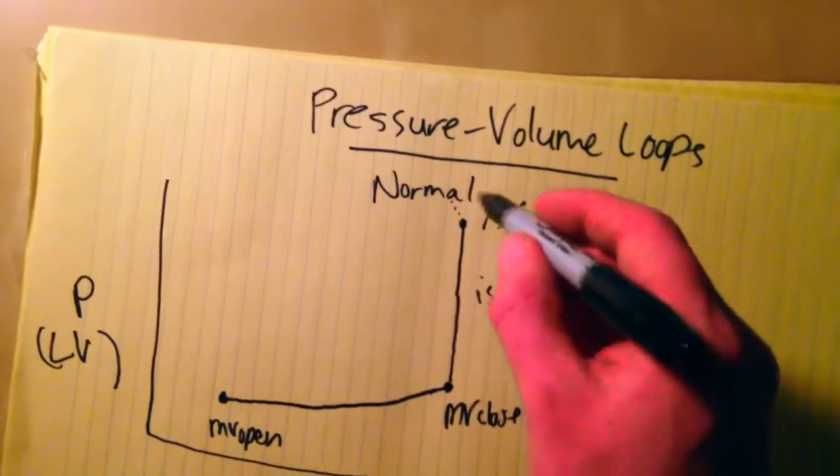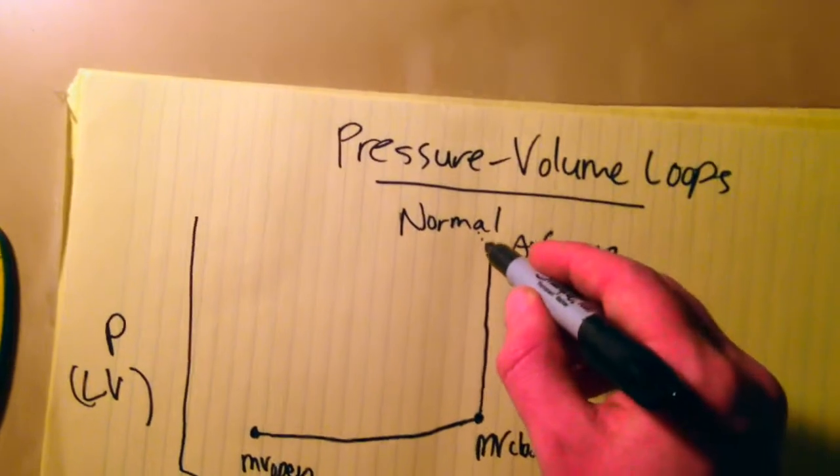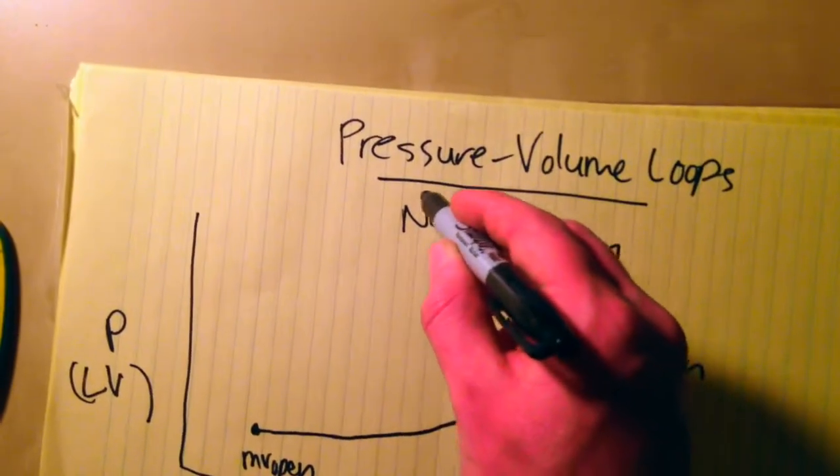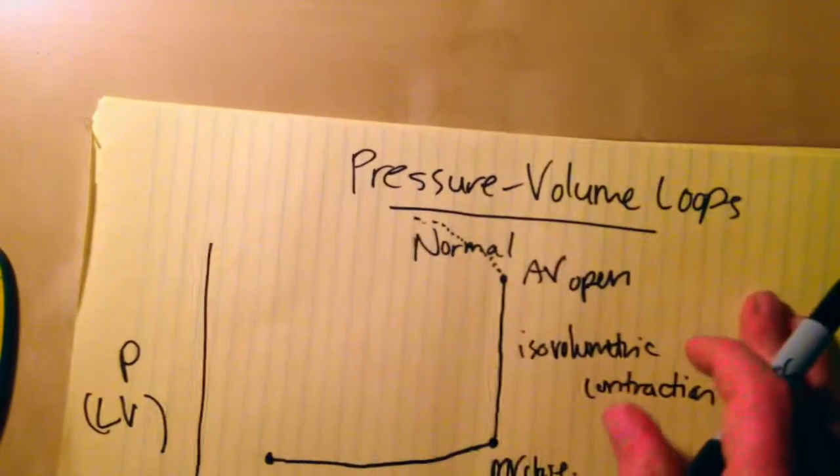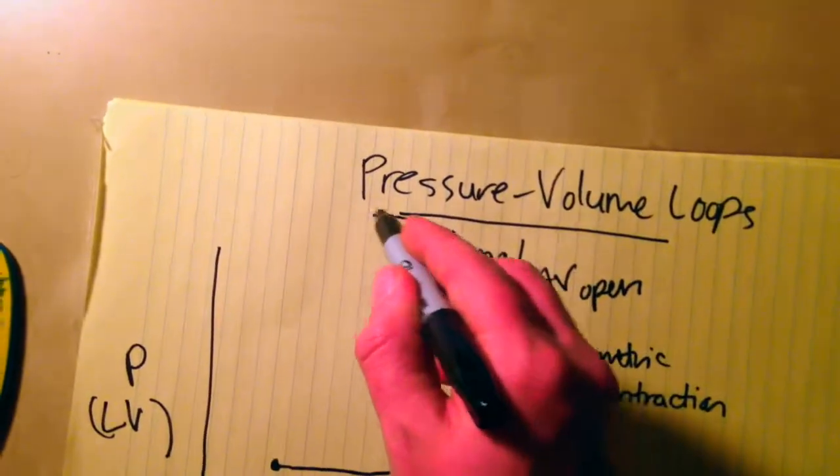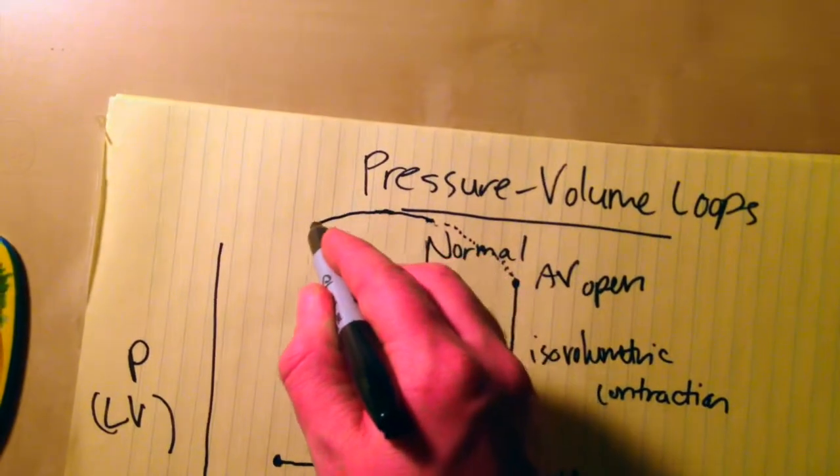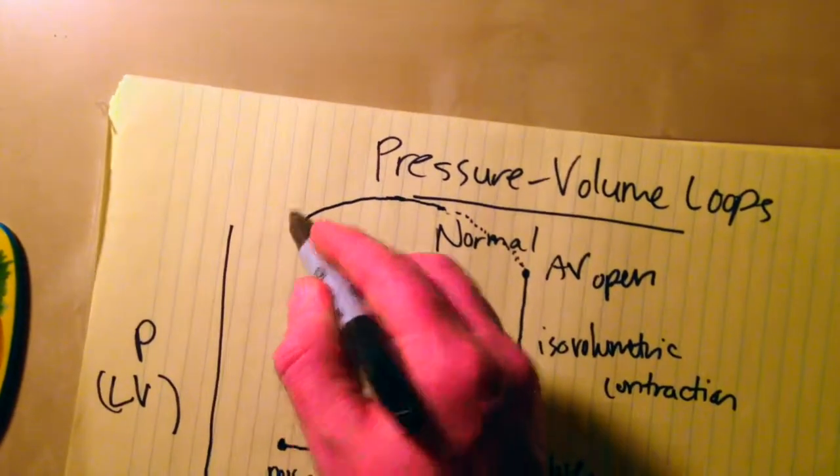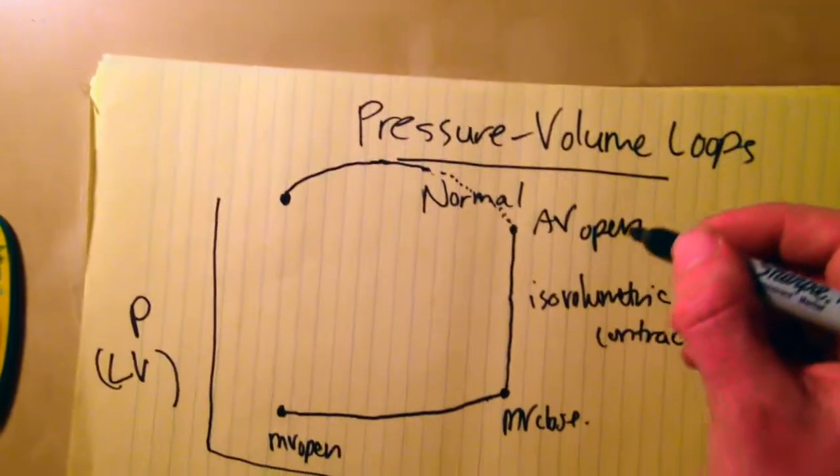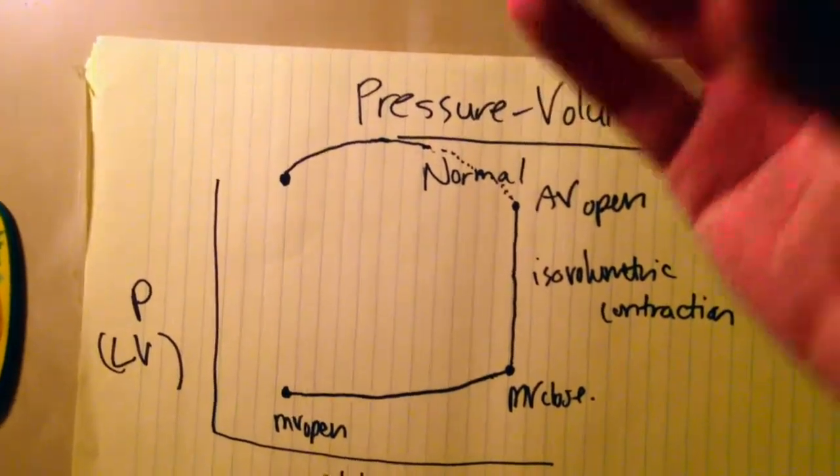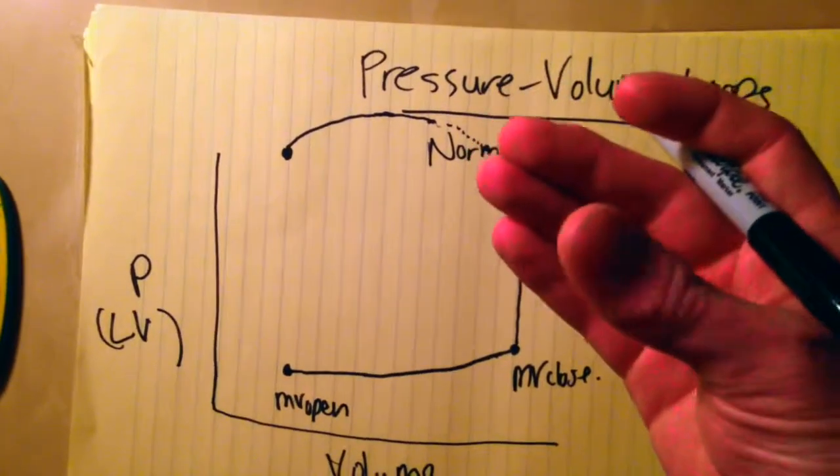This pressure does actually get a bit higher in the left ventricle as the muscle continues to squeeze. But it eventually reaches a point where all that volume is gone, and the ventricle is starting to relax as that contraction peters out.